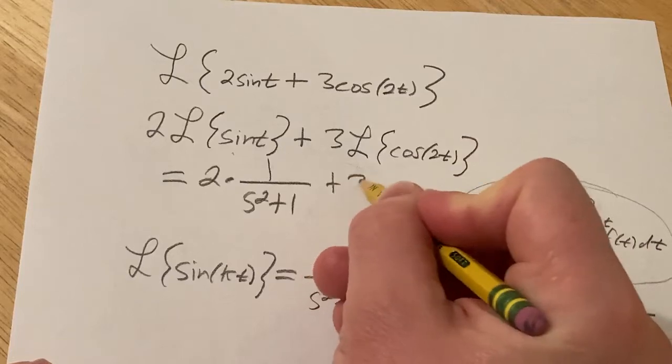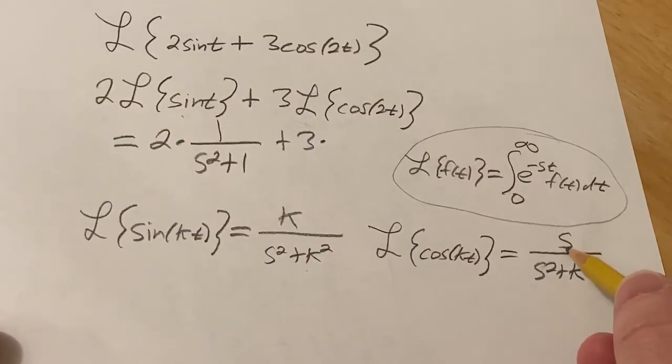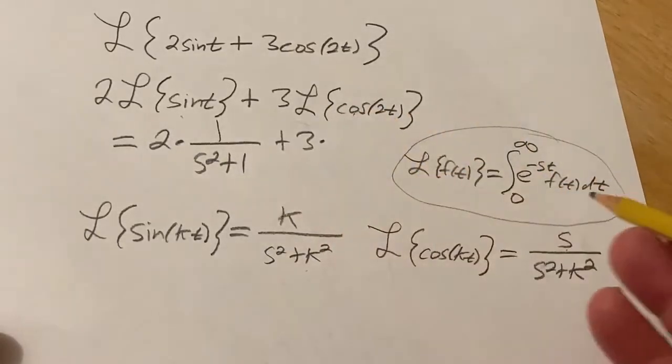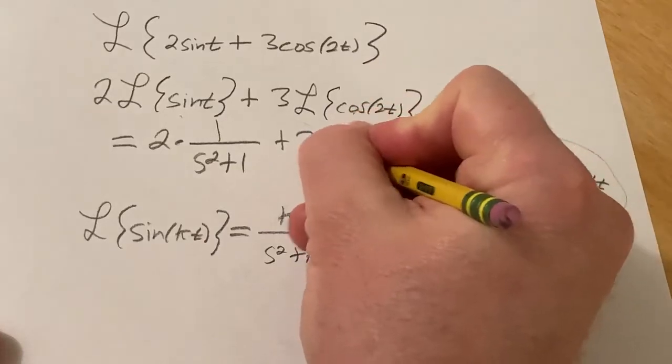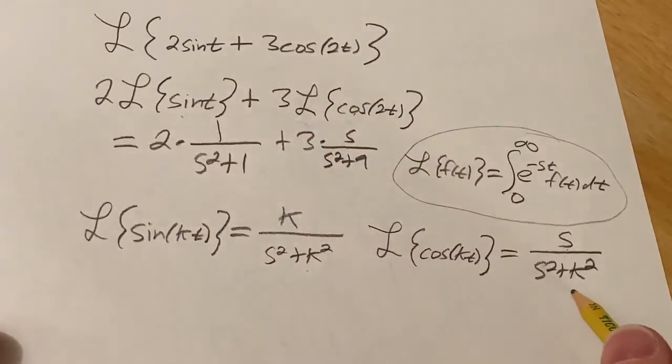And then plus 3 times, and here cosine has the s. That's how I memorize these. Cosine has the s. I know it doesn't make sense, but it works for me. So it's s over s squared plus 9, because it's 3 squared.